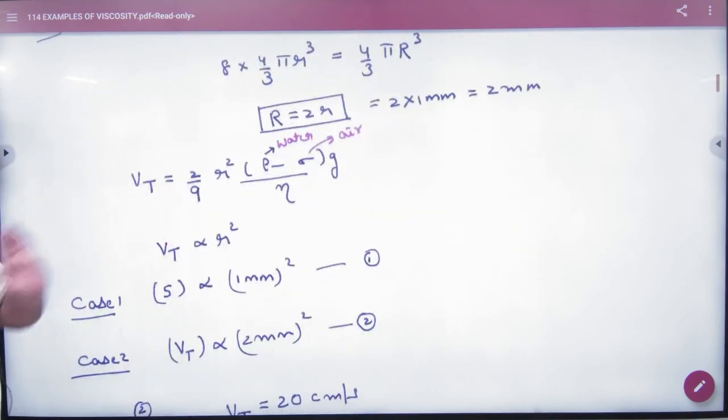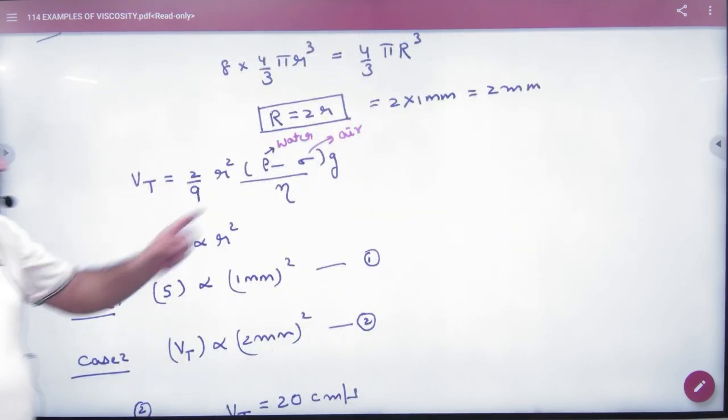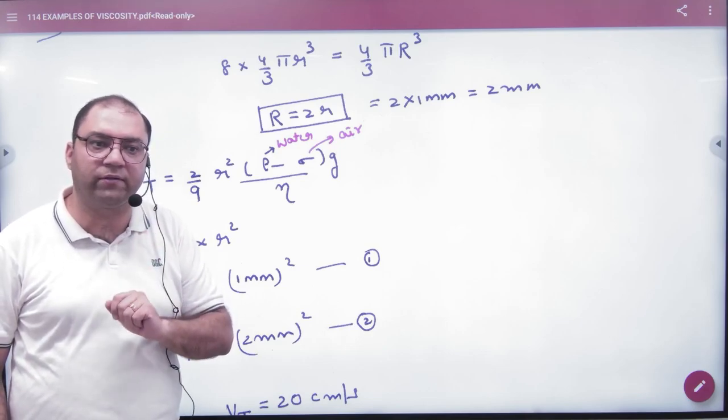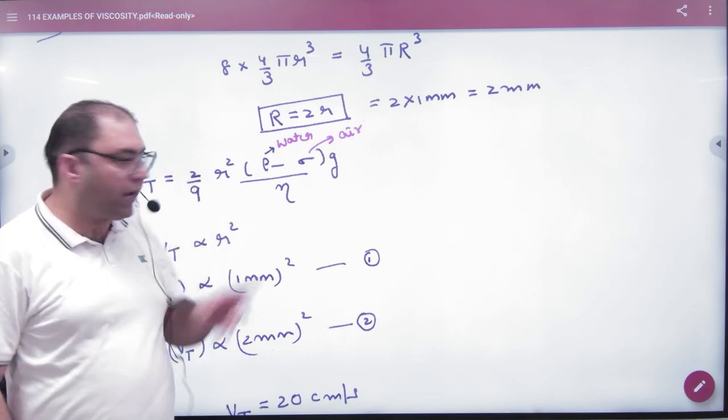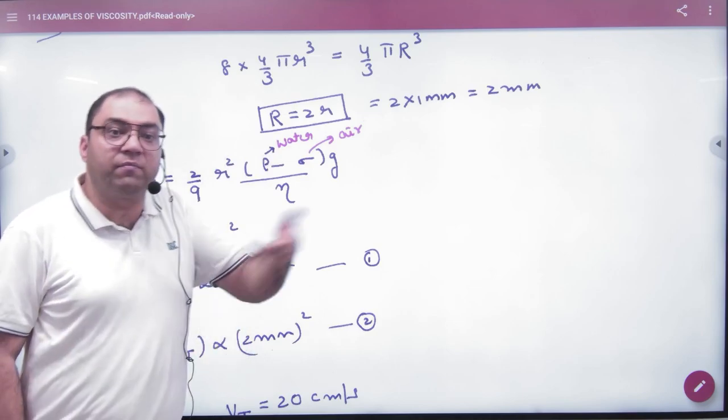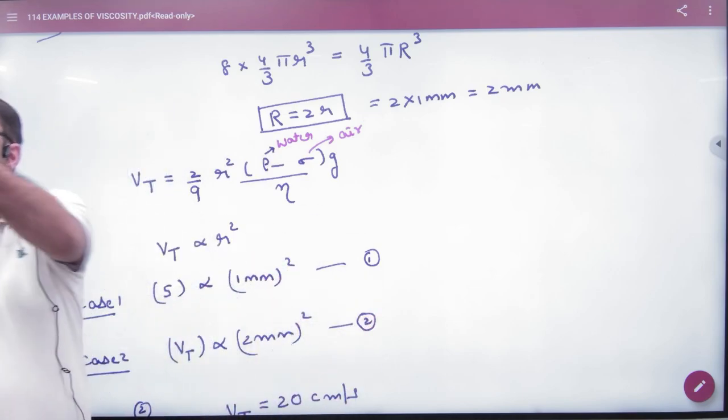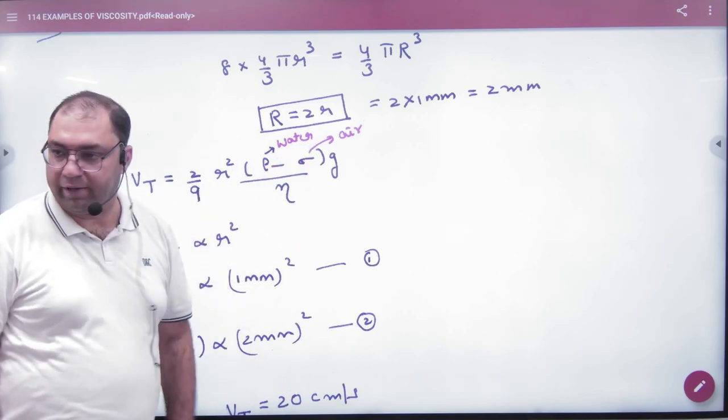Terminal velocity formula is this: first density is the body, which is the water drop, minus the medium density, which is air. When the big drop is falling, the density difference will not change. No difference in g, no difference. Eta water is the same big and small, 2 by 9 is the same.